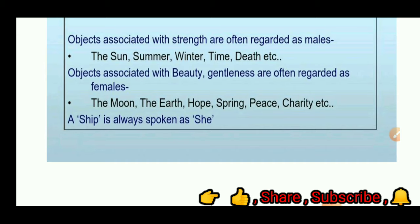Objects associated with strength are often regarded as masculine. For example, the sun, summer, winter, time, death, etc. Objects associated with beauty and gentleness are regarded as feminine — for example, the moon, the earth, hope, spring, peace, charity, etc. A ship is always spoken of as 'she'.